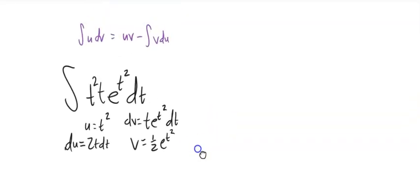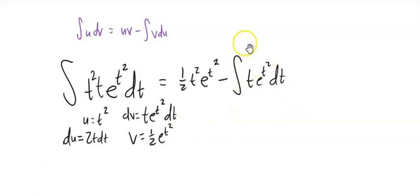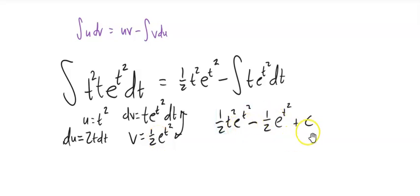So now: u is t², v is 1/2 e^(t²). This equals u times v: t² times 1/2 e^(t²), minus the integral of v du — that's 1/2 e^(t²) times 2t dt, which simplifies to t e^(t²) dt. I've actually already done that integral — it's 1/2 e^(t²) — so the final answer is 1/2 t² e^(t²) minus 1/2 e^(t²), plus C.